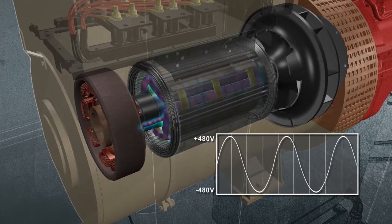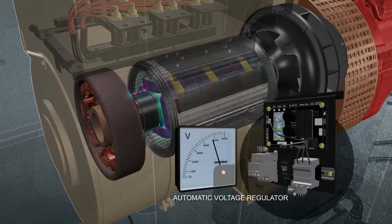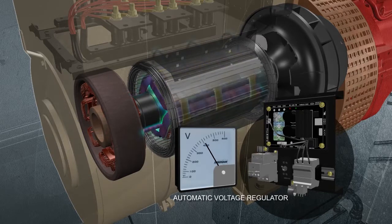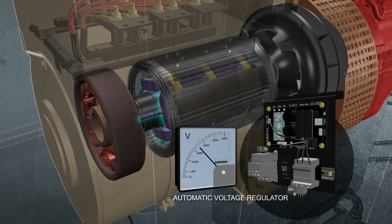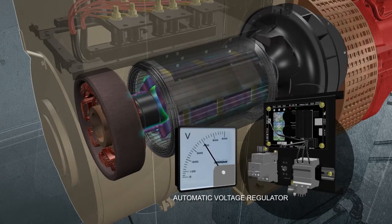To do so, an automatic voltage regulator, or AVR, adjusts the magnetic fields as needed. During heavy power demands, voltage decreases, causing the AVR to increase the magnetic field. Conversely, when power demands are low, the AVR tempers the field.